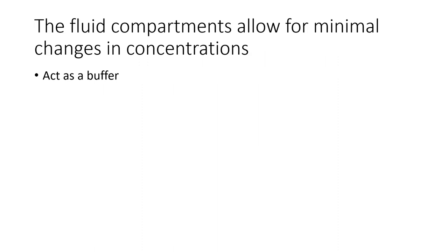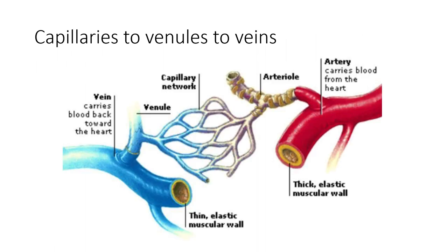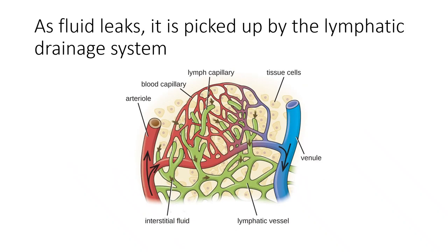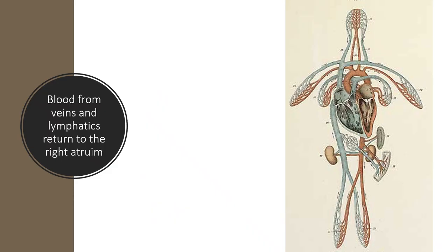The fluid compartments act as a buffer, allowing only little changes to occur. You can see how arteries go into arterioles to metarterioles and then capillaries and then into venules — gas exchange, nutrient exchange, and fluid changes all occur in the tissues. Because of blood pressure, proteins, and salt content, there is leakiness in the capillaries, and that leakiness is picked up by lymphatic capillaries. Lymphatic capillaries pretty much drain to the subclavian veins, which eventually drain back into the right atrium.